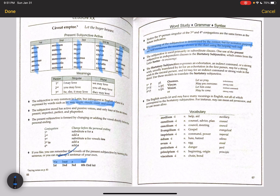All right, now looking back at page 67, at the third bullet point, the subjunctive is used primarily in subordinate clauses. One use of the present subjunctive in independent clauses is the hortatory subjunctive, which comes from the Latin hortor, to encourage. So the hortatory subjunctive, and that does have to do with encouraging. The hortatory subjunctive expresses an exhortation, an indirect command, or a strong wish, usually translated by let for an exhortation in the first person, may for a second person, and let or may for an indirect command or strong wish in the third person. Use these models to translate the hortatory subjunctive.